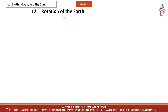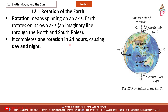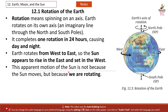12.1 Rotation of the Earth. Rotation means spinning on an axis. Earth rotates on its own axis, an imaginary line through the north and south pole. It completes one rotation in 24 hours, causing day and night. Earth rotates from west to east, so the sun appears to rise in the east and set in the west. This apparent motion of the sun is not because the sun moves, but because we are rotating.